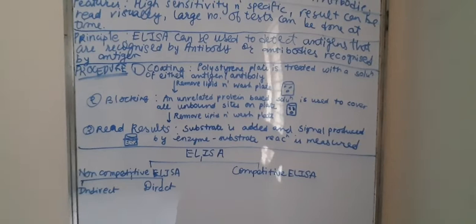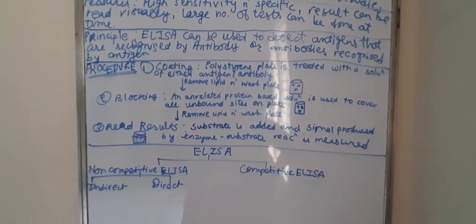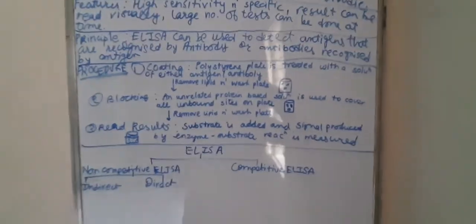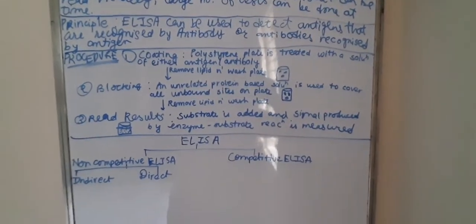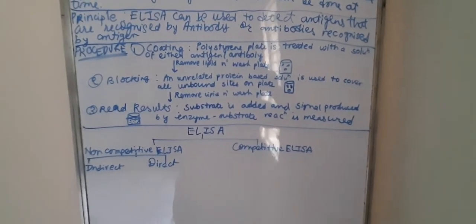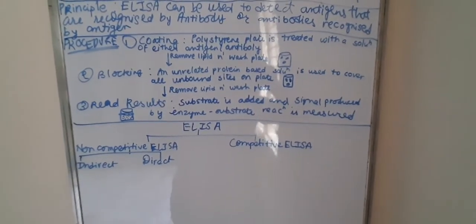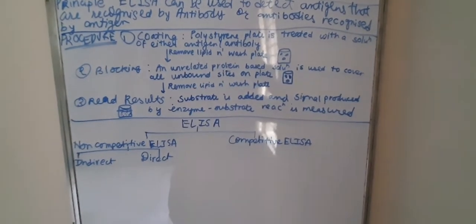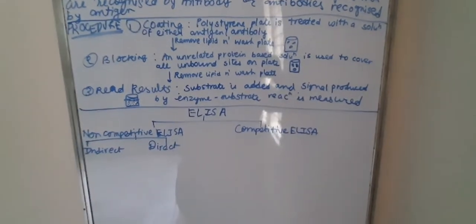Step two is blocking. An unrelated protein-based solution - the antigen or antibody - is used to cover all the unbound sites on the plate. Then, we remove the lipid and wash the plate.